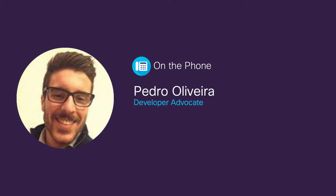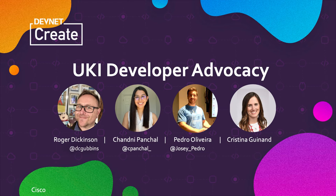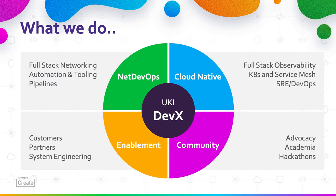Hi, we are the UKI Developer Advocacy Team. My name is Roger. My name's Chandni. And my name is Pedro. As the UKI Developer Advocacy Team, we love DevNet and DevNet loves us because we are passionate about emerging technology. When we talk about emerging technology, we're talking about Cloud Native and NetDevOps. What we do is we take these emerging technologies to our customers and our partners.